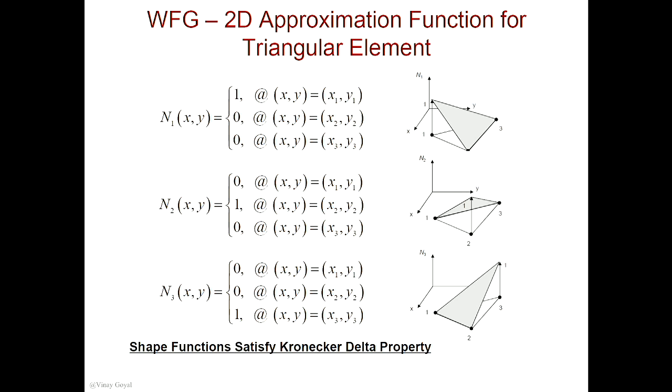So all the shape functions must add to one. This partition of unity property is allowing us to represent a constant temperature on the element. It's allowing us to represent that behavior. In solid mechanics, you'll be representing rigid body motion — if the triangle moves to the right by the partition of unity property, we can represent that rigid body motion.